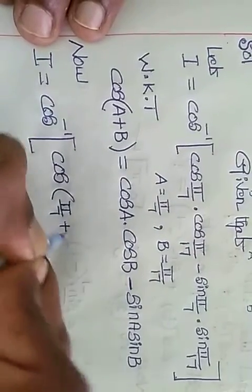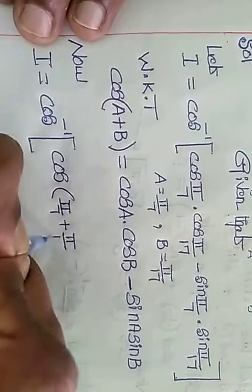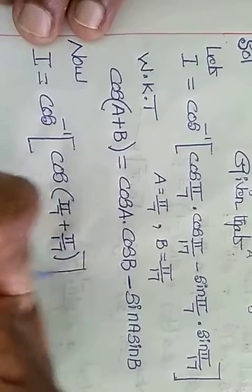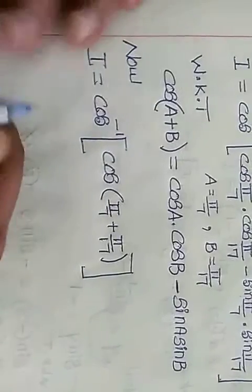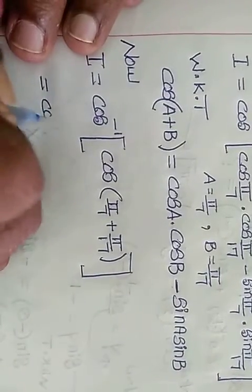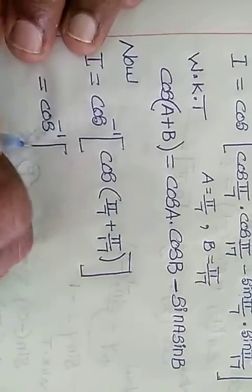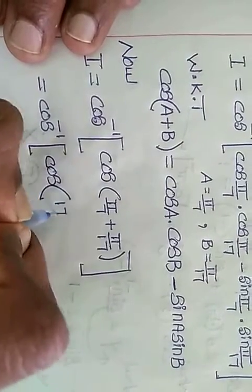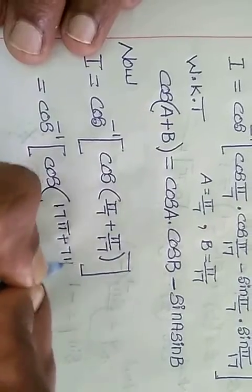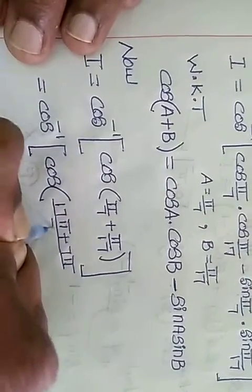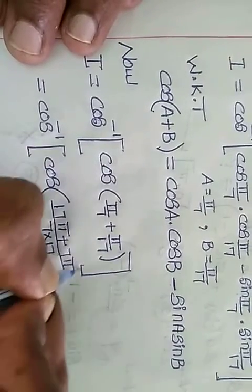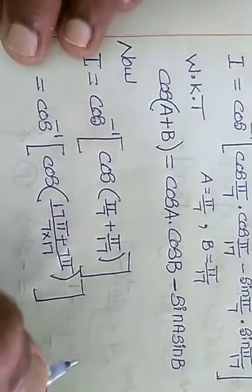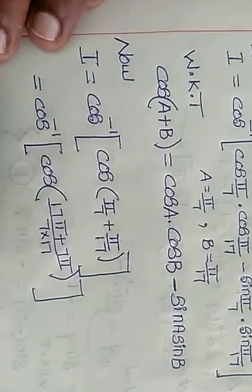So cos inverse of cos of a plus b, where a is pi by 7 plus b is pi by 17. So that is equal to cos inverse of cos, cross multiplication, 17 pi plus 7 pi divided by 7 into 17.